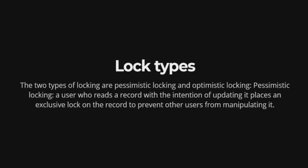The two types of locking are pessimistic locking and optimistic locking. With pessimistic locking, a user who reads a record with the intention of updating it places an exclusive lock on the record to prevent other users from manipulating it.